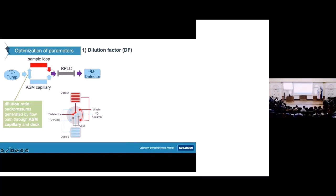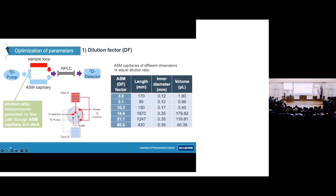Starting with the dilution factor — this is the split ratio between the sample stored in the sample loops and the bypass in the ASM capillary, and it depends on back pressures. You can change the dilution factor by changing the dimensions of the capillary. For example, a longer capillary has higher back pressure, so less flow goes through the capillary and you get a lower dilution factor. In this study, we also tried higher dilution factors compared to the commercially available ones.